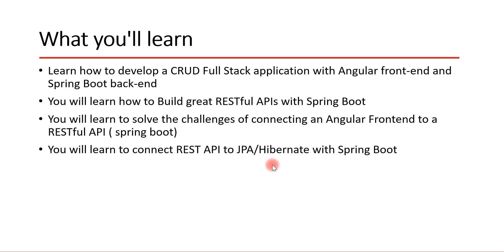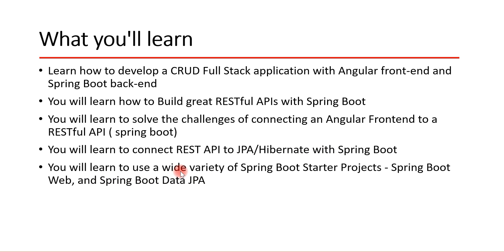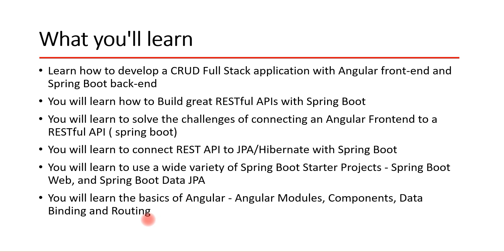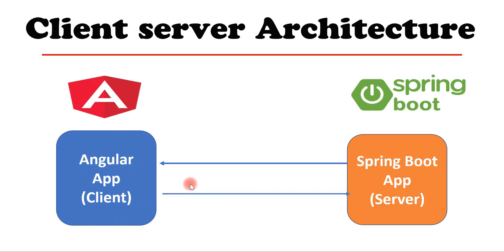You'll learn how to connect a REST API to JPA or Hibernate with Spring Boot. We're going to use Spring Data JPA, which uses Hibernate as a JPA provider. You'll also learn how to use a wide variety of Spring Boot starter projects such as spring-boot-starter-web, Spring Boot Data JPA, and other dependencies. We'll use a MySQL database, so you'll learn how to connect a Spring Boot application with MySQL. You'll also learn the basics of Angular: modules, components, data binding, and routing.